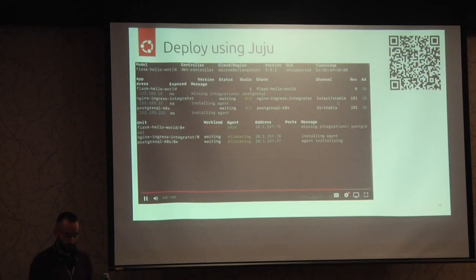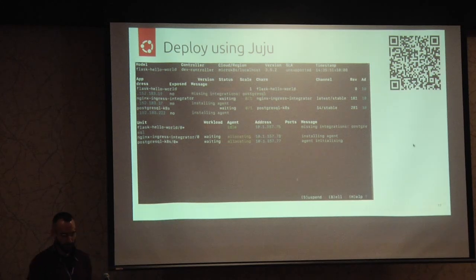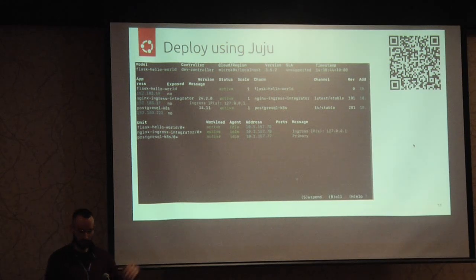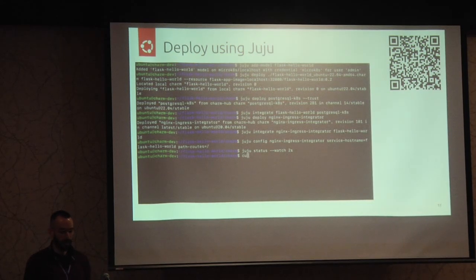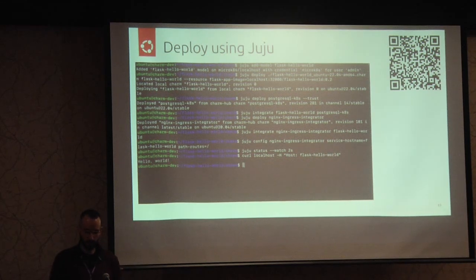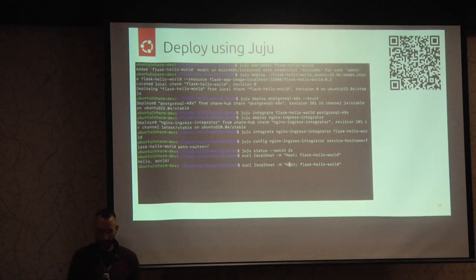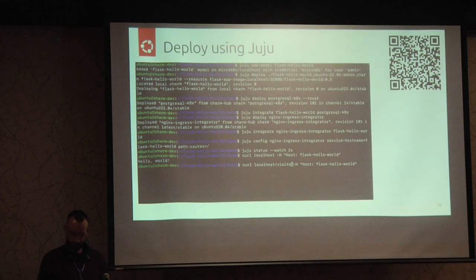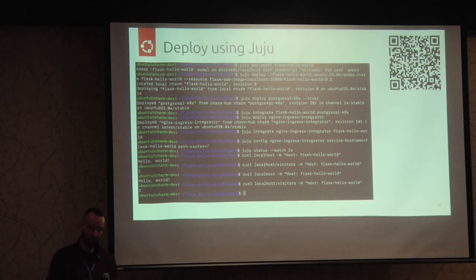We've asked Juju to do a whole bunch of things, and we just give it a moment. Eventually everything becomes green and everything is active. We use curl to send a request to the Flask application running locally — passing the Flask Hello World host header — and get 'hello world' as expected. Querying the visitors endpoint shows one visitor, and after sending the root request again, we have two visitors. The database integration is working.